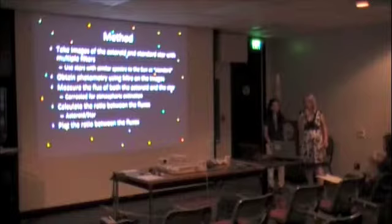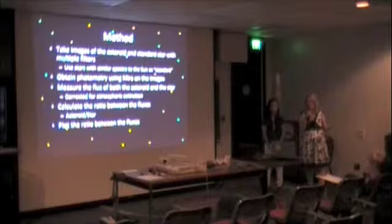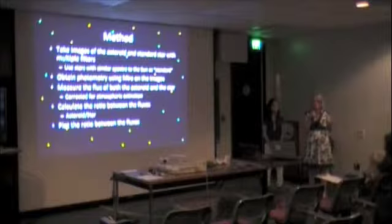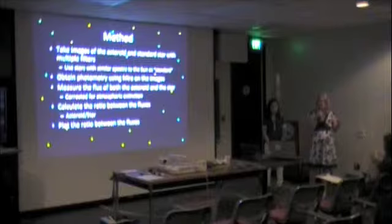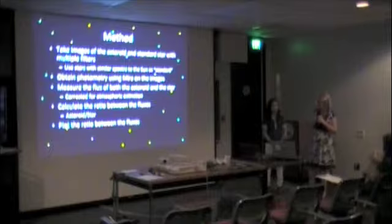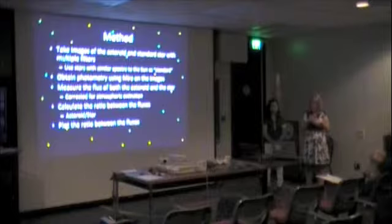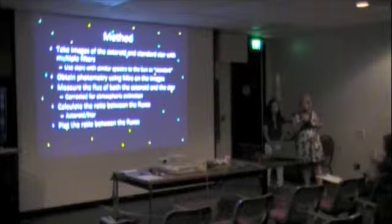Our method was to take images of the asteroids and a standard star with multiple filters. The standard star was relatively similar to the Sun, because we needed to subtract its contribution since asteroids reflect sunlight. We obtained photometry using MIRA on the images, measured the flux of both the asteroid and the star, calculated the ratio between those fluxes, and then plotted the ratio.